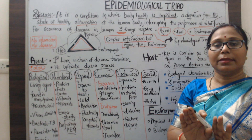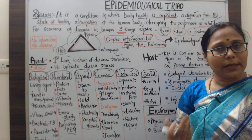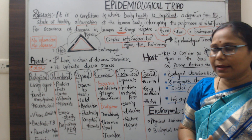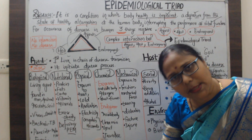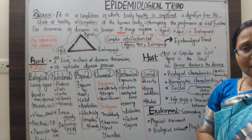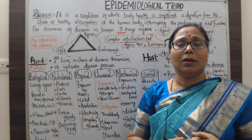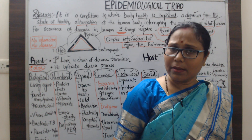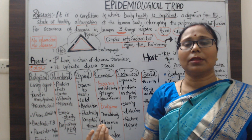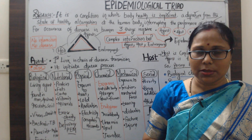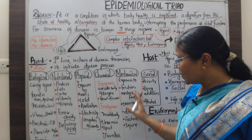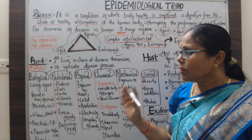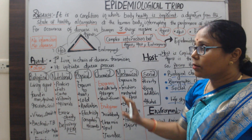The fifth category is mechanical agents — physical force such as being hit in an accident, fractures, dislocations, or continuous friction of the skin causing boils. These put a person into a disease condition. The sixth category is social agents — poverty, drugs, medications, and alcohol. Living in a low-income group with no proper housing, overcrowding, or habits of drug use in the society — these are social agents that put a person from healthy to ill health.